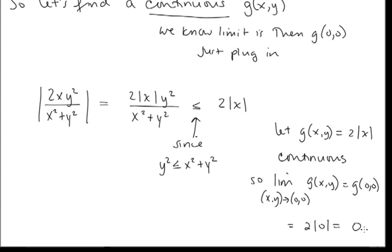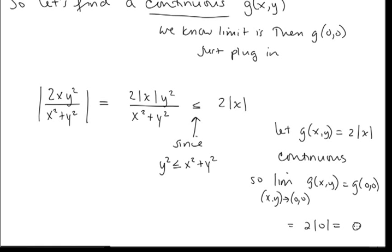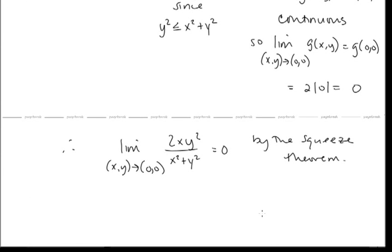We found g(x, y) = 2|x| to fit the squeeze theorem: |f(x, y) − L| ≤ g(x, y), and the limit as (x, y) → (0, 0) of g(x, y) = 0. Therefore, by the squeeze theorem, our limit is also equal to 0.